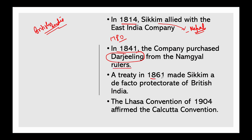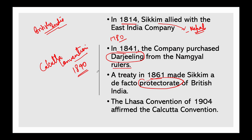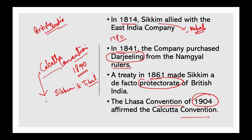A treaty in 1861 made Sikkim a de facto protectorate of British India. Subsequently, the Calcutta Convention of 1890 demarcated the border between Sikkim and Tibet. This convention was signed by Viceroy Lord Lansdowne and the Chinese Imperial Associate Resident in Tibet. The Lhasa Convention of 1904 later affirmed the Calcutta Convention.